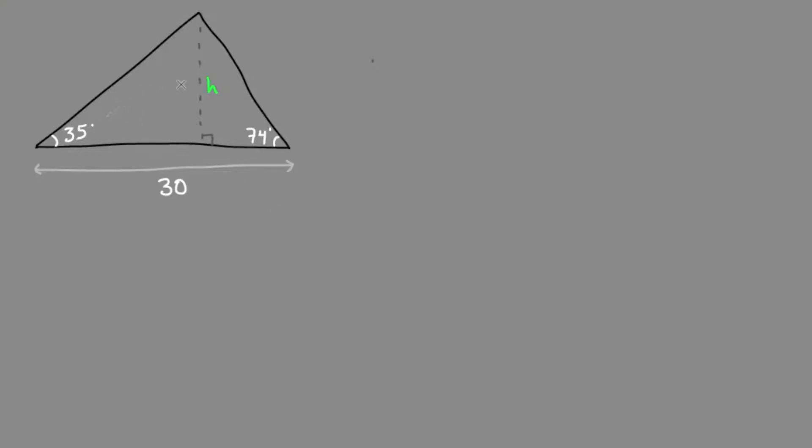Because then we can use trig with the opposite and the adjacent. So what can we use for the base of the smaller triangles? Well, given the total is 30, if we said that this base of the triangle on the left is x, then the base of the other triangle would be 30 minus the length x.